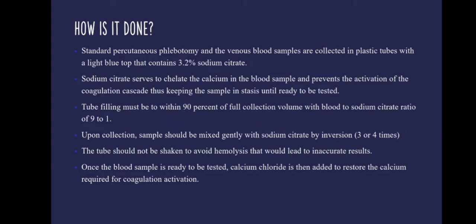So how is it done? The blood sample is obtained through standard percutaneous phlebotomy and the venous samples collected are put in plastic tubes with a light blue top that contains 3.2% sodium citrate. This sodium citrate serves to chelate the calcium in the blood sample, thereby preventing activation of the coagulation cascade, keeping the sample in stasis till it is ready to be tested. The tube filling must be to within 90% of full collection volume, with the blood to sodium citrate ratio being 9 to 1. Upon collection, the sample should be mixed gently with the sodium citrate by inversion, done 3 or 4 times. The tube should not be shaken as this can cause hemolysis, which can lead to inaccurate results.